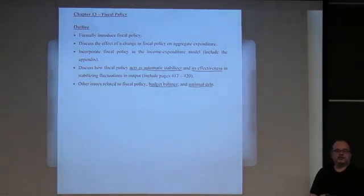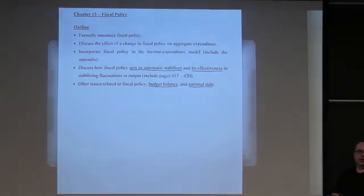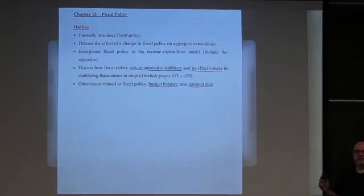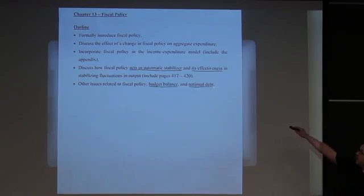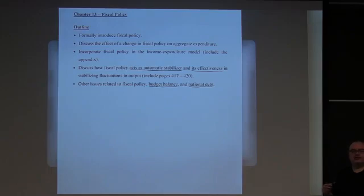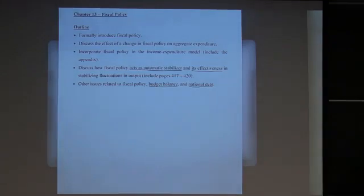Canada's fiscal year starts beginning of April through to the end of March. In the first nine months of the fiscal year that started last April, the federal government has the biggest deficit they've ever had in their history. The budgetary balance is a huge negative amount, meaning Canada's national debt has grown by several hundred billion dollars.